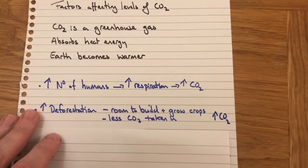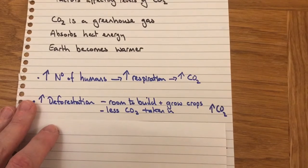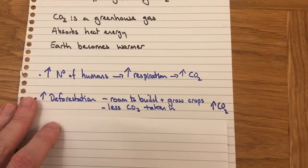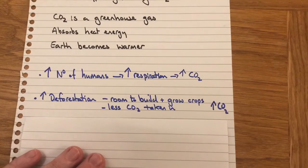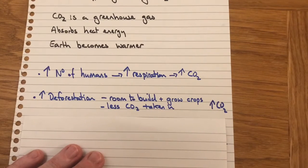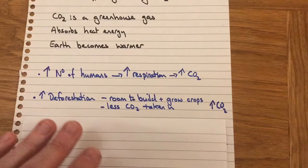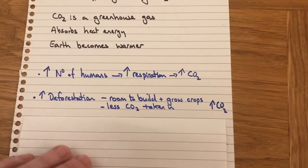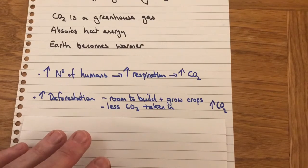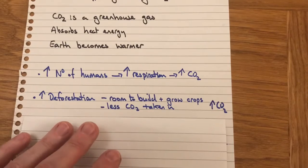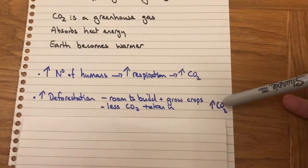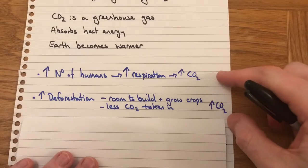Why are we doing this? People are removing forests to make room to build so people can live, but also to grow crops to feed people. Deforestation means cutting down trees. Removal of trees means photosynthesis can't happen, so less carbon dioxide is taken in, which means we get an increase in CO2 levels.